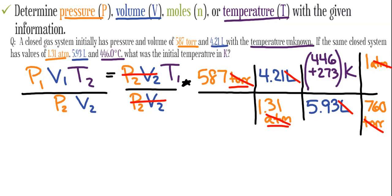Notice torr and atmospheres both cancel out. Our resultant answer will be in Kelvin, so there's no reason to convert it. We get 301 Kelvin.